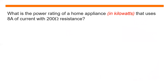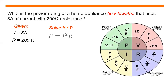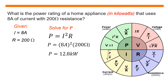Another problem: what is the power rating of a home appliance in kilowatts that uses 8 amperes of current with 200 ohms resistance? Given: current equals 8 amperes, resistance equals 200 ohms. Solving for power: P equals I squared multiplied by R, that is 8 amperes squared multiplied by 200 ohms. Power equals 12.8 kilowatts.